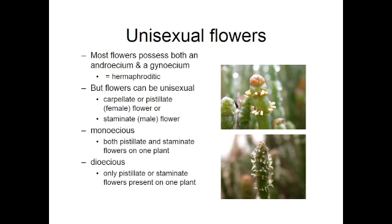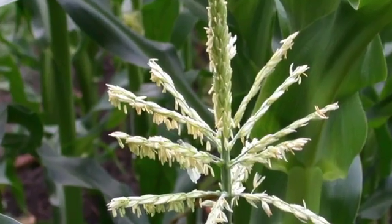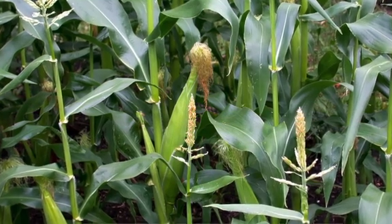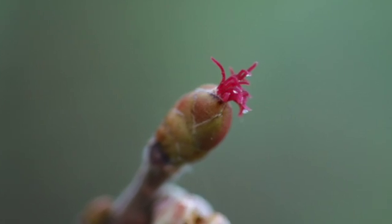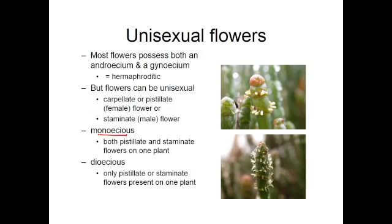Most flowers contain both sexes — they're bisexual — but some species have separate male and female flowers. These two sorts of flowers can be on the same plant but separated in location, such as in sweet corn or hazels, and these are called monoecious plants. In other cases, a species may have separate male plants and female plants, as in these samphire plants — you can see little pollen-bearing anthers on the males and little feathery stigmas on the females. In this case, the plants are called dioecious.